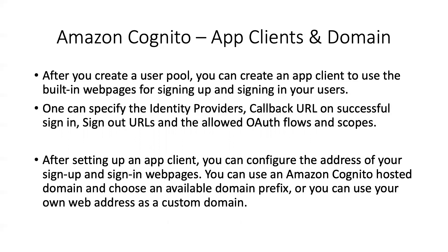A domain is the address you configure for sign-up and sign-in. It can be a domain you purchase on Cognito itself, or you can create your own custom domain and attach it to Amazon Cognito with your own SSL certificate. In today's lab, we are going to go with an Amazon Cognito-based domain. We are not going to create the app client manually — the app client is going to be created from Elasticsearch itself.